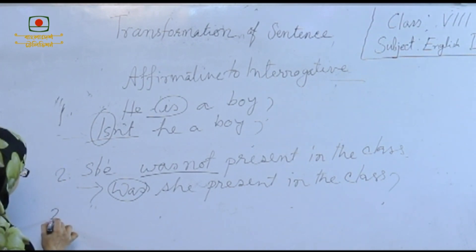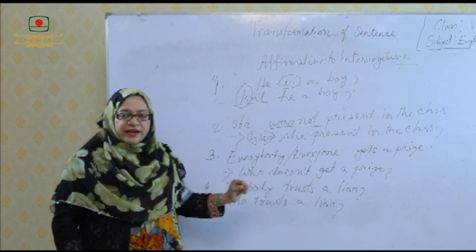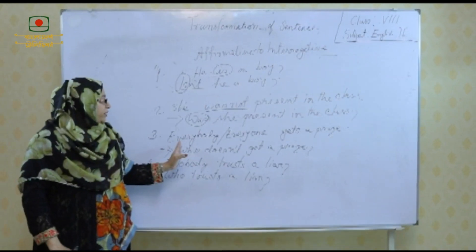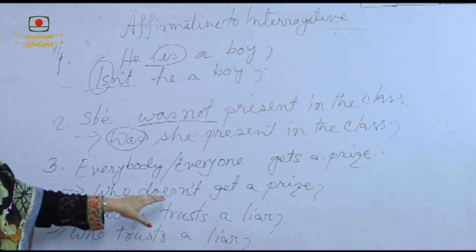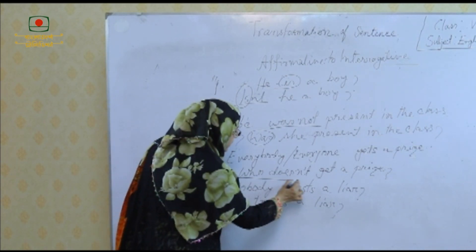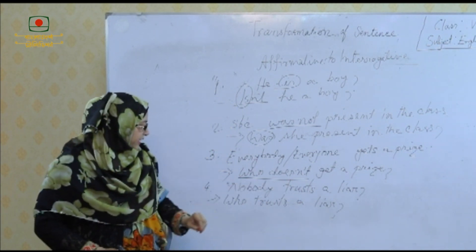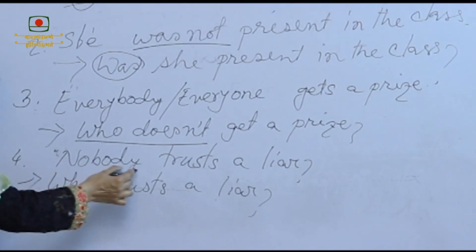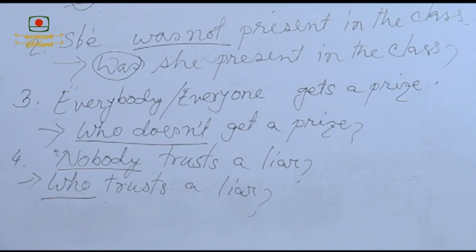Another rule: 'Everybody or everyone gets a prize' — when we turn it into interrogative, we use 'Who does not get a prize?' And for the negative form 'Nobody trusts a liar', we use 'Who trusts a liar?'